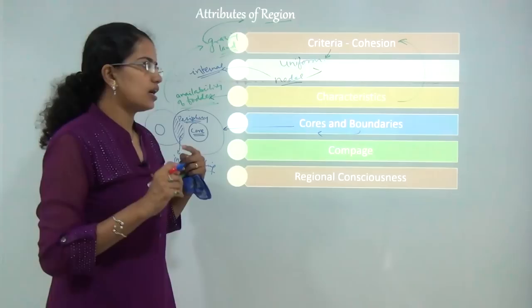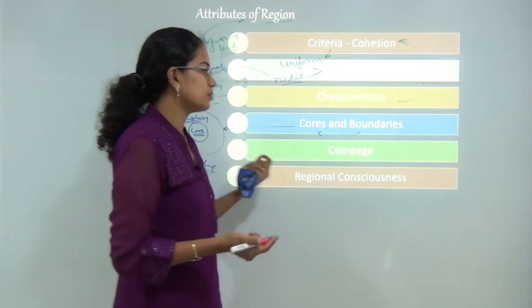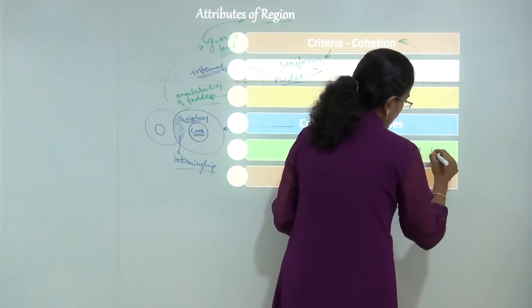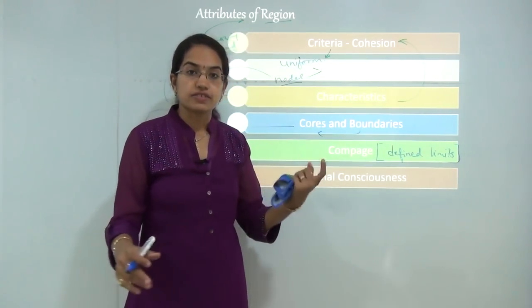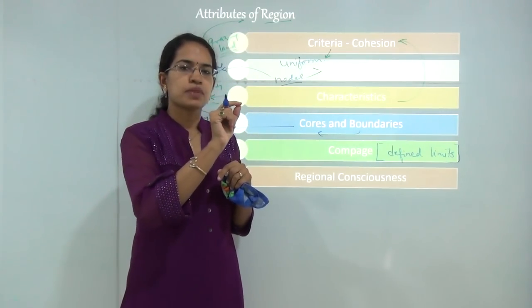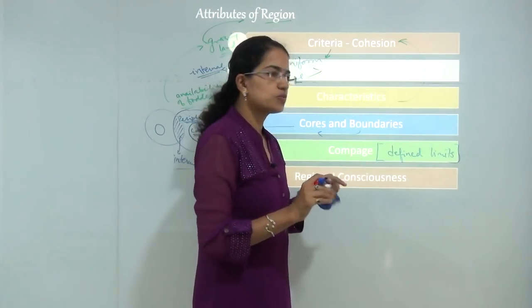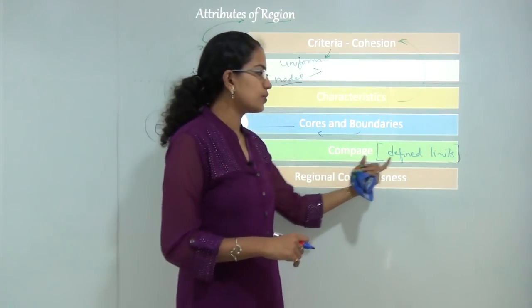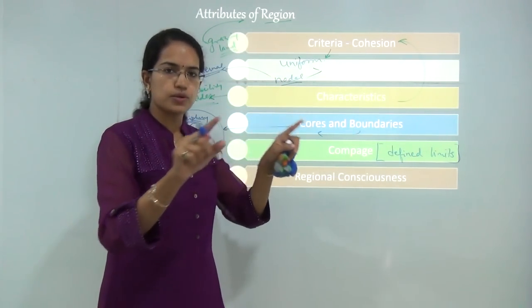Next is compage. Compage is the unlimited homogeneous area. It talks about real relationships, but the only limitation of compage is it lacks defined limits - there is no defined limit for which I can say my region ends here. That is commonly the case with languages: I can say this language is spoken in this region, but I cannot draw a sharp boundary on a map and say that beyond this region there would be no person speaking this language. Compage will be relatively homogeneous in nature, but it is hard to define exact limits or exact boundaries.